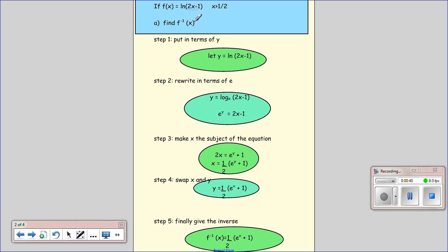So the first thing is we just redefine our f of x as y, so we let y equal our function. We then want to rewrite in terms of e, so instead of having it as a log, we want to rewrite it in terms of the base and the power and the answer.